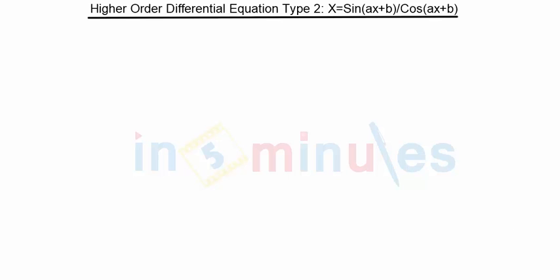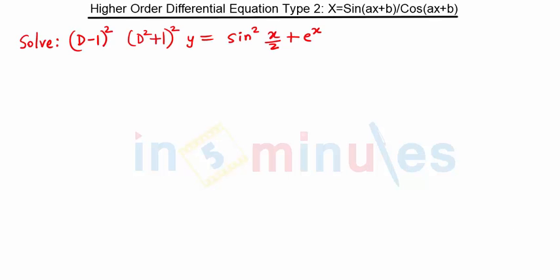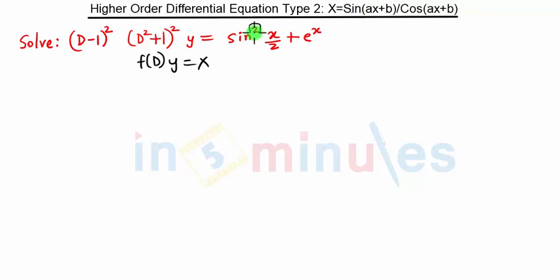Hello everyone, welcome to 'In 5 Minutes'. In this video we are going to see the next problem on Type 2. This is our question. If you see, this equation is of the form f(D)·y = X, where X is this part. But in Type 2, we need everything in terms of sin(ax + b) — we do not want a square term.